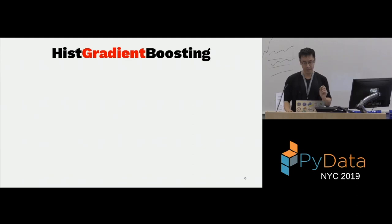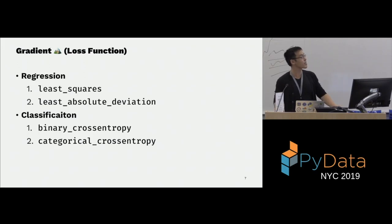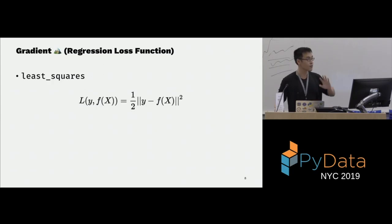Gradient boosting is a special type of boosting. If you're familiar with neural networks, you need a loss function. For regression, we have least squared loss, and in our newest version 0.22 being released this month, there's least absolute deviation. For classification, there's cross-entropy loss. For this talk, let's focus on the least squared loss.